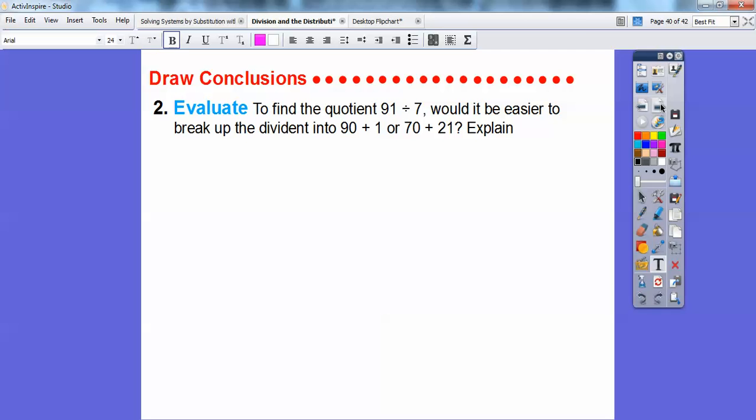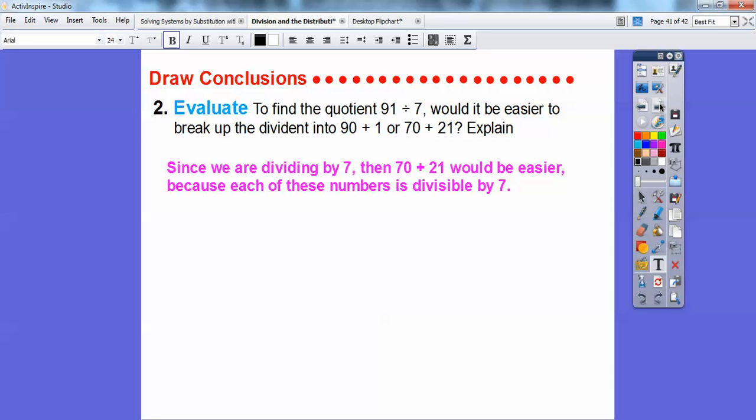So to find the quotient of 91 divided by 7, would it be easier to break up 90 plus 1 to break up the dividend? There should be a D right there. My AP students keep telling me I misspell things, and my fingers get typing too fast right there. So would it be easier to break up this 91 as 90 plus 1 or 70 plus 21? Well, it depends on what we're dividing by, and since we're dividing by 7, I would pick these two numbers, because these two numbers are easier to divide by 7 right there.